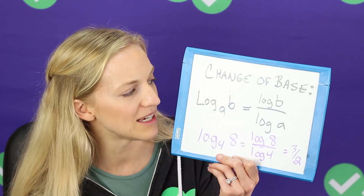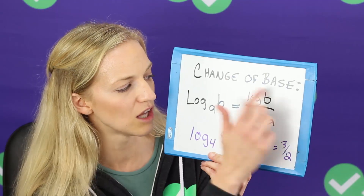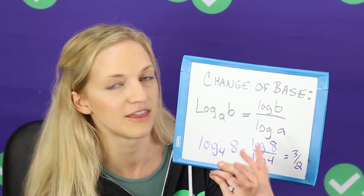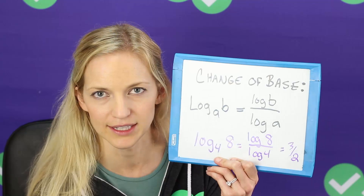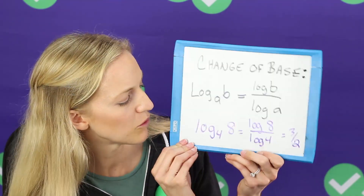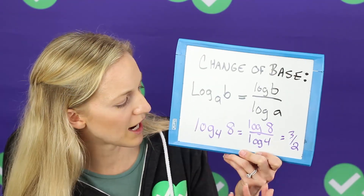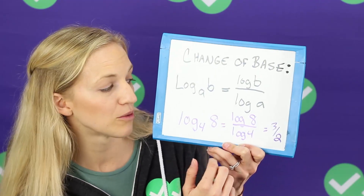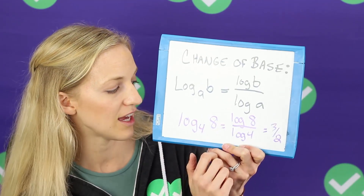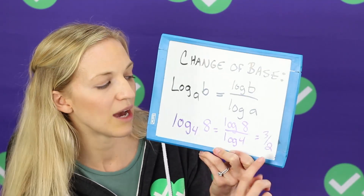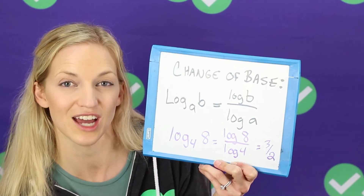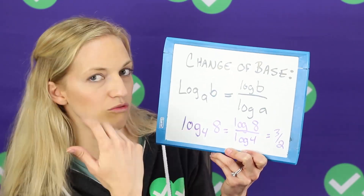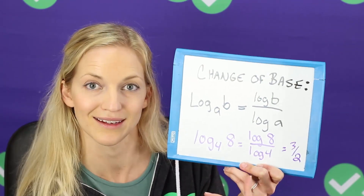So log base A of B — the change of base rule says that equals log of B over log of A. The base of 10 here is implied if you don't see a base. So if we were trying to solve log base 4 of 8, in our calculator we could plug in log of 8 over log 4, and we would end up getting 3 halves. We could check that: 4 raised to the 3 halves would equal 8.